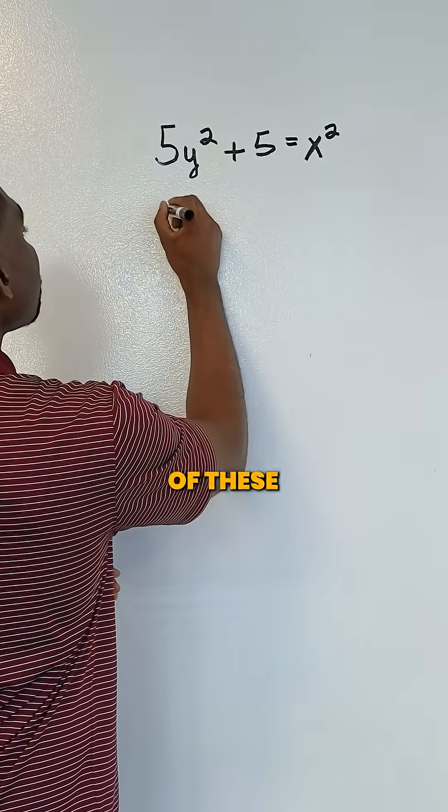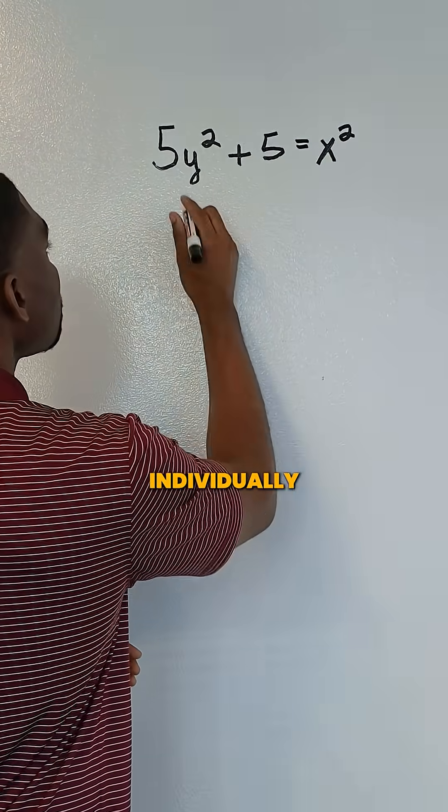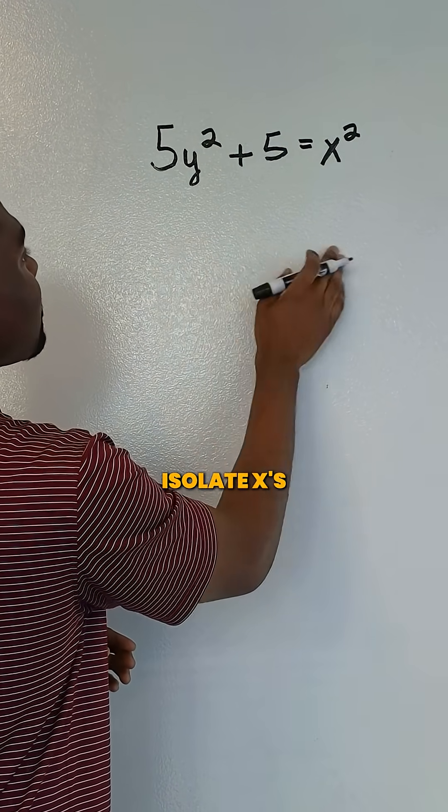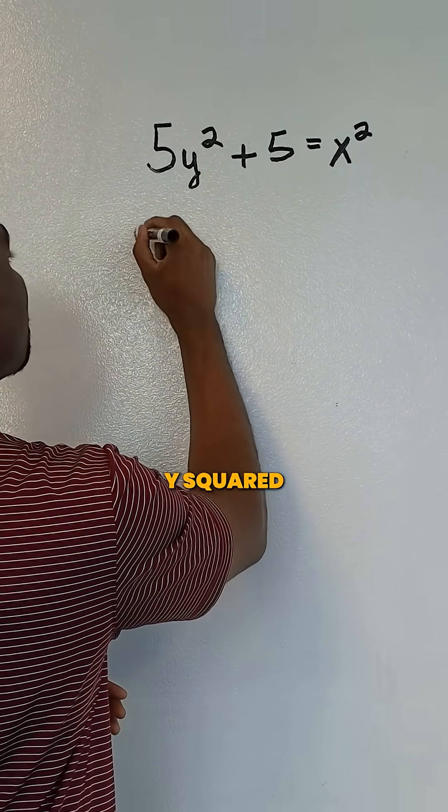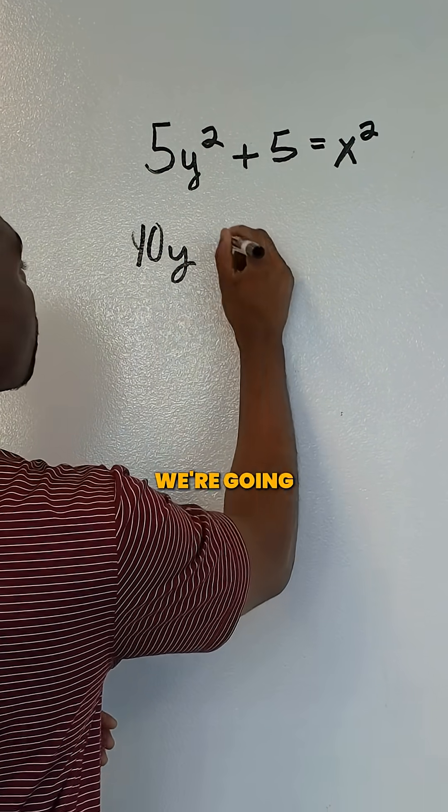So we're going to take the derivative of these things individually, but you're not going to isolate x's and y's. You're going to say that the derivative of 5y² is simply going to be 10y and then we're going to write a dy/dx.